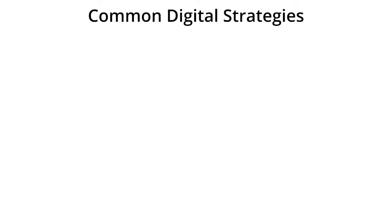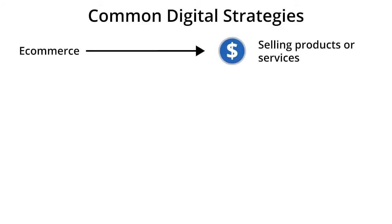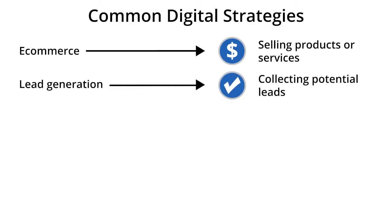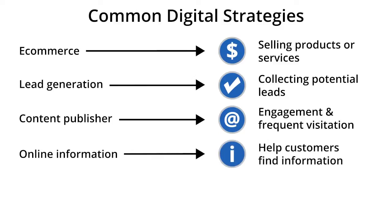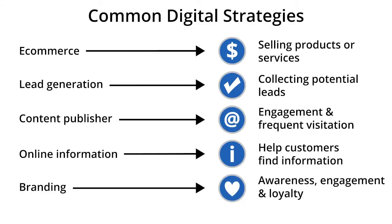Remember, each business will have its own set of strategies, but most of them will closely relate to these five common types: for e-commerce sites, selling products or services; for lead generation sites, collecting potential leads; for content publishers, encouraging engagement and frequent visitation; for online information or support sites, helping users find the information they need; and for branding, driving awareness, engagement, and loyalty.